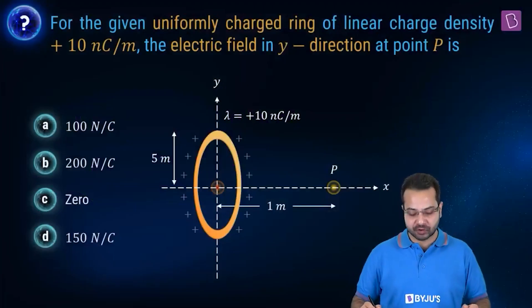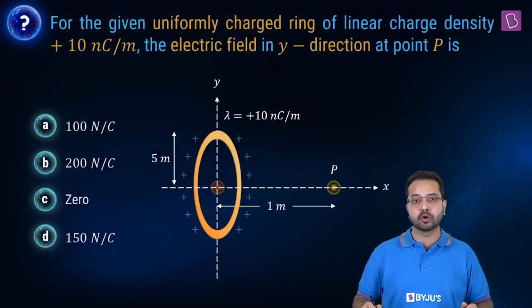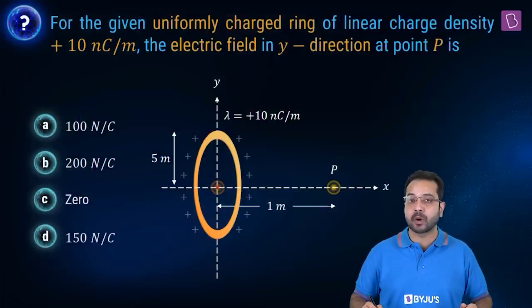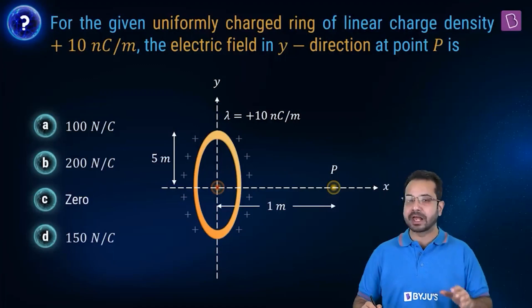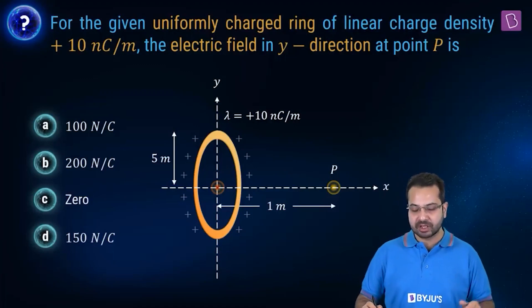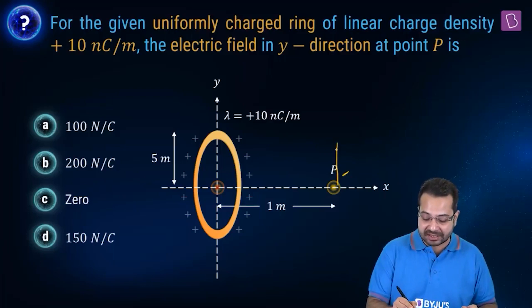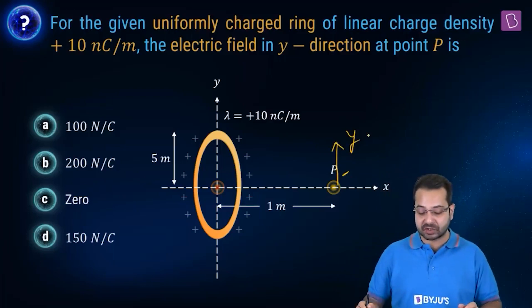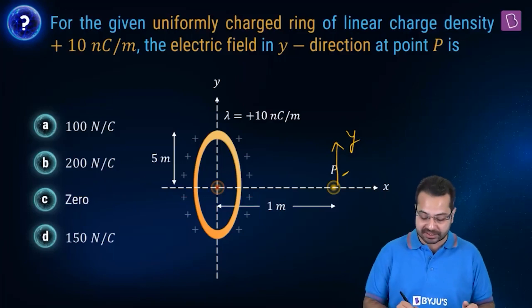For the given uniformly charged ring of linear charge density plus 10 nanocoulomb per meter, the electric field in the Y direction at point P is what? We have a charge ring, on the axis of the ring there is a point P, and we are interested in the Y direction — the electric field perpendicular to the axis.